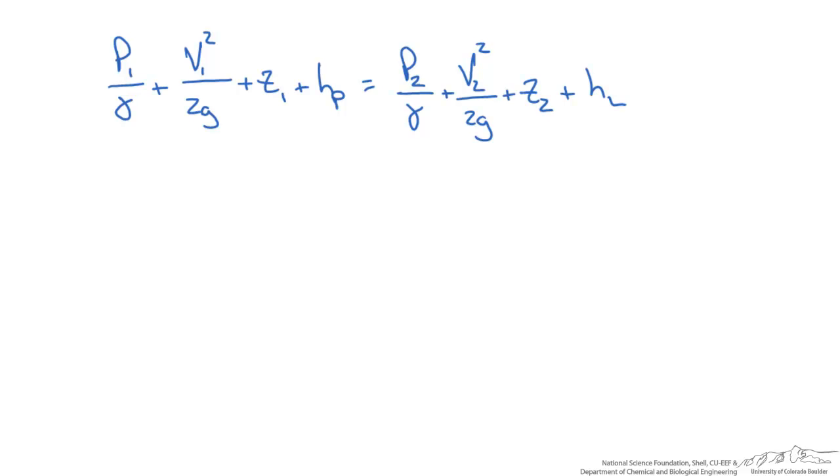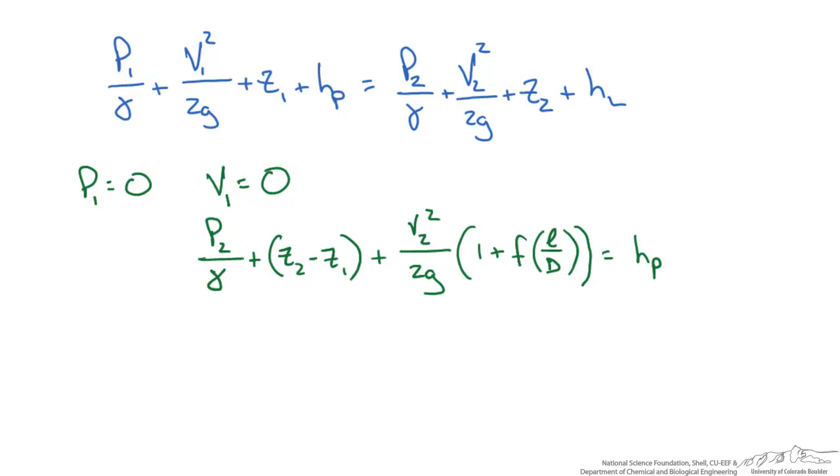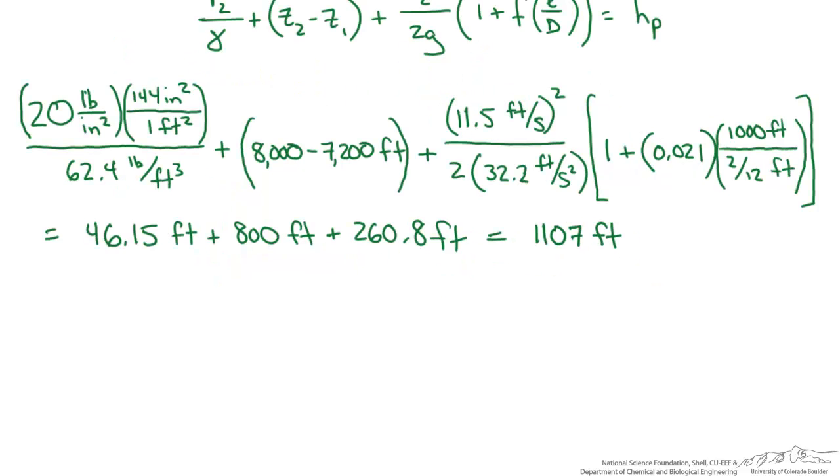Let's go back to our main equation and rewrite it in the form we're most interested in. We know if we use gauge pressure that P₁ equals 0 since it's open atmosphere. The velocity at 0.1 is also 0, assuming the lake velocity is irrelevant. Knowing that, we could rewrite our equation, combining our head loss term with the kinetic term. At this point it's just plug and chug. When I plug in all these numbers I end up getting about 1,100 feet as our pump head.